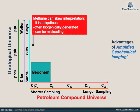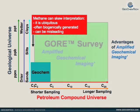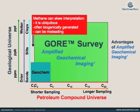Also, the measurement of methane can skew the interpretation because it is ubiquitous and often from biogenic sources. By comparison, the Amplified Geochemical Imaging data set is robust and rich with measurements of hydrocarbons up to C20 and sensitivity to part per trillion.